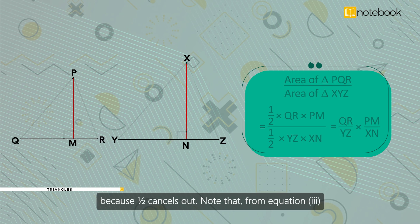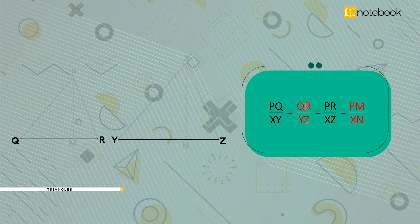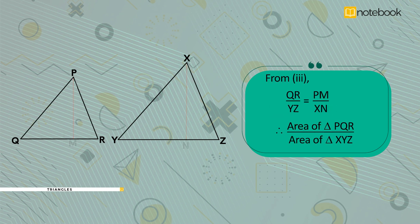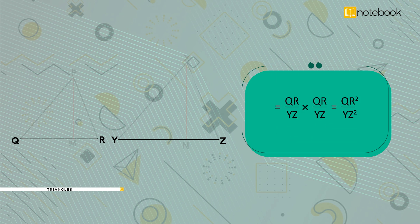Note that from equation 3, QR by YZ is equal to PM by XN. So, area of triangle PQR divided by area of triangle XYZ is equal to QR by YZ into QR by YZ, is equal to QR square by YZ square.